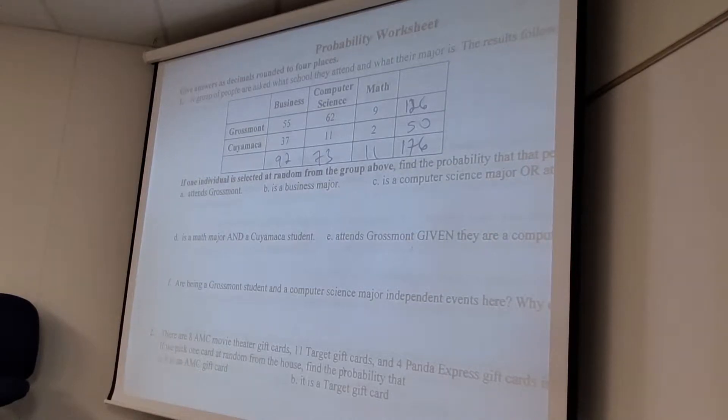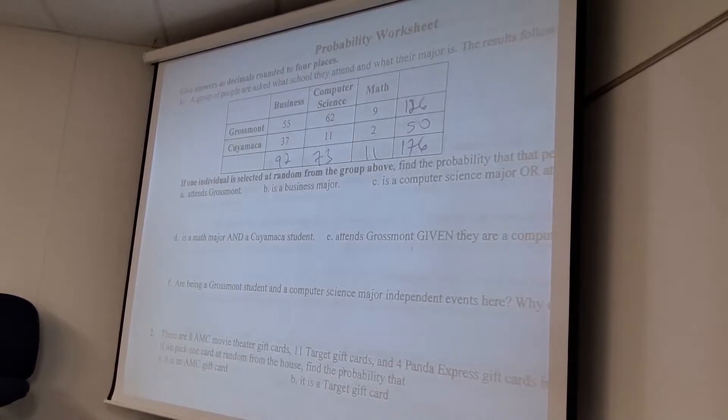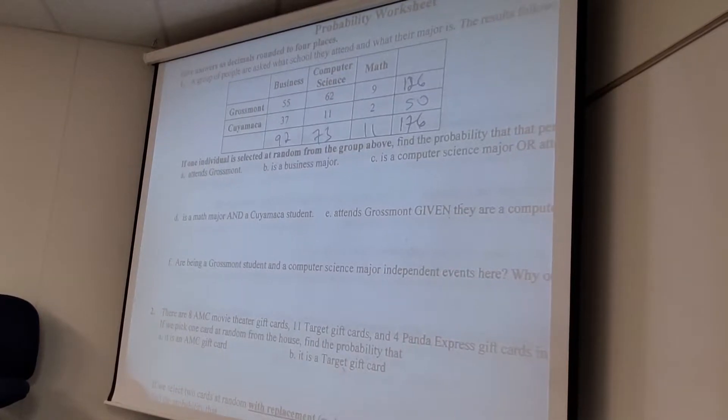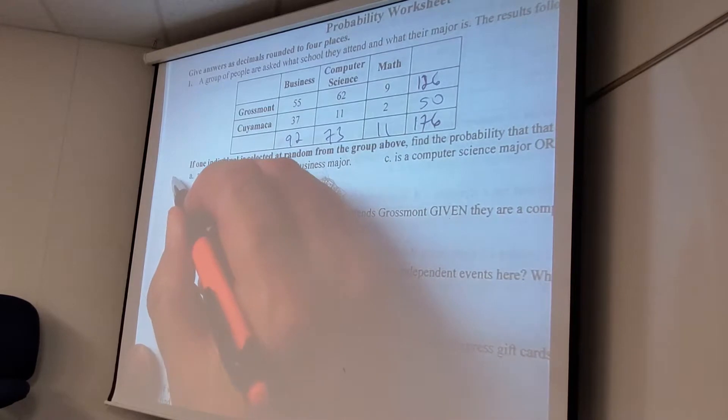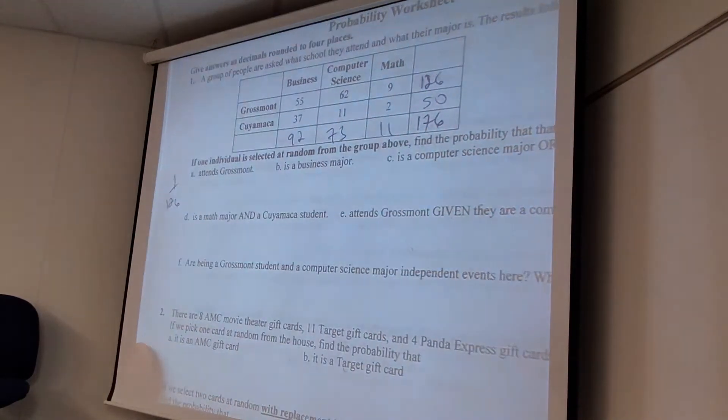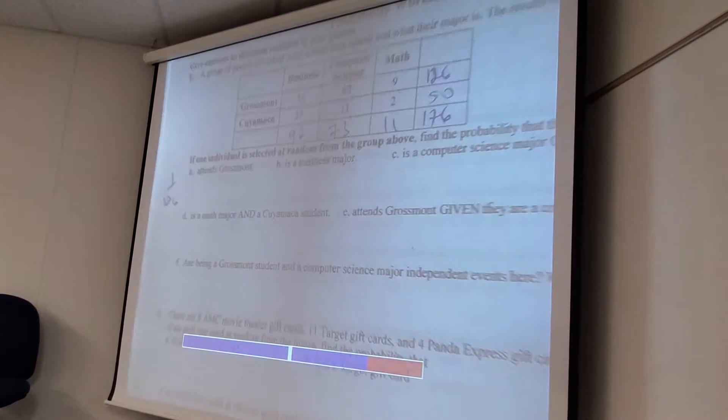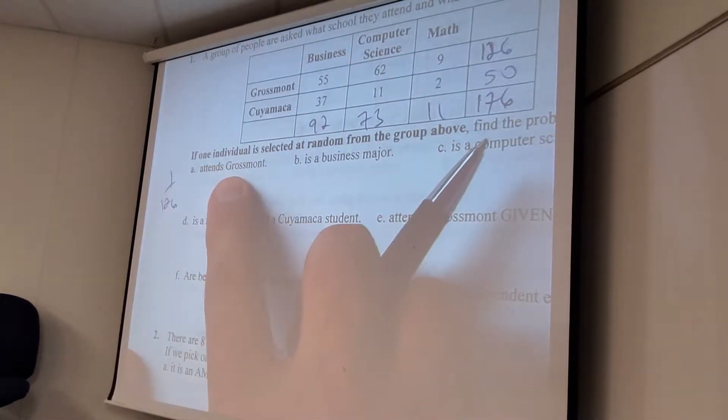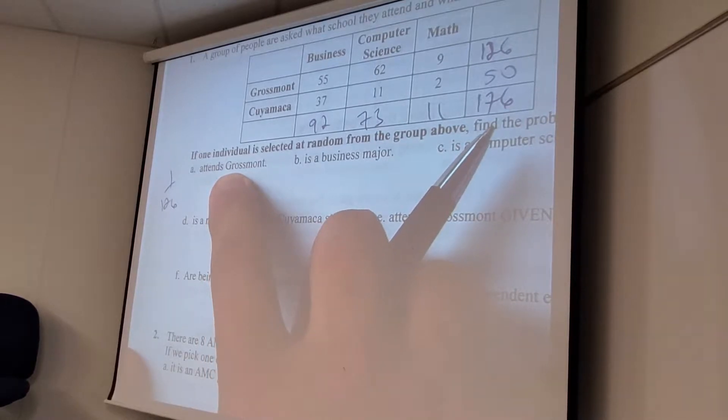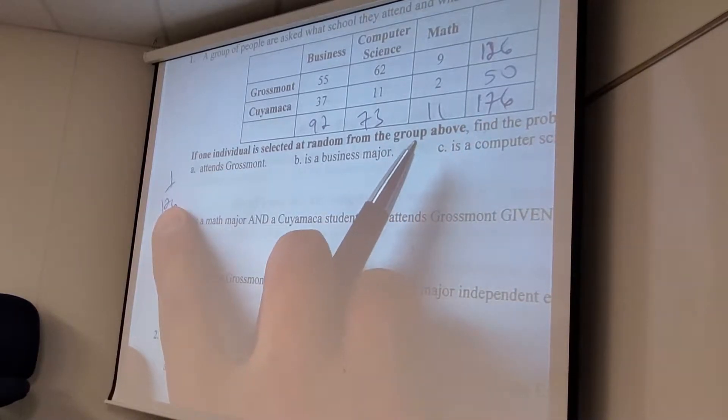If you add something up wrong, I'm going to take points off for that. And then if you did all the work correct, I'm not going to take any more points off. But double check at the beginning that all your numbers are right or else your probabilities are all going to be wrong.